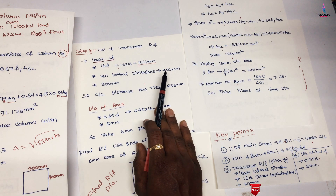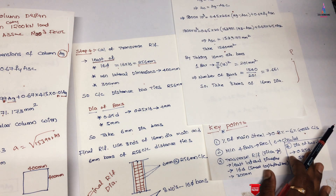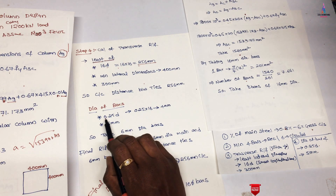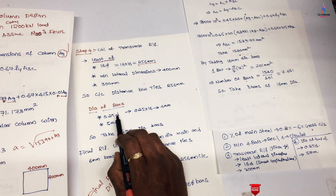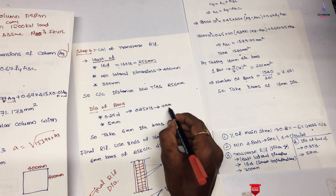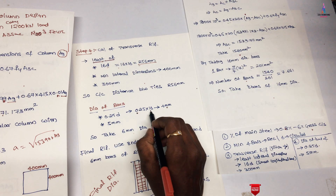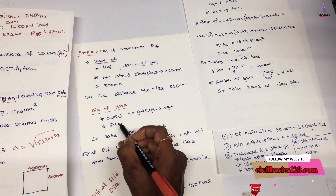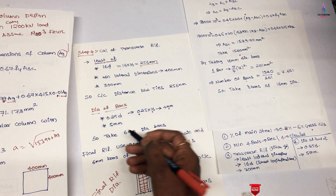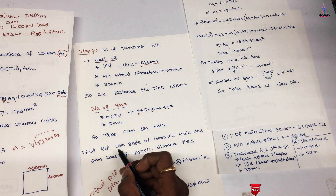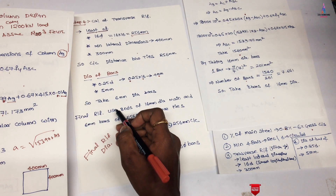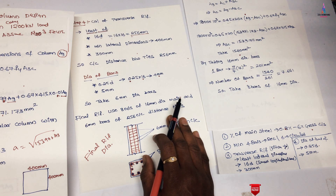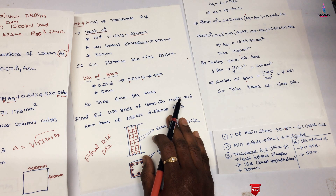For the diameter of lateral tie bars, we consider the greater of 0.25 × 16 = 4 mm and 5 mm minimum. Since both values are small, we adopt 6 mm diameter bars for the lateral ties. Therefore, the final reinforcement is: 8 bars of 16 mm diameter as main reinforcement, and 6 mm diameter ties at 256 mm center to center spacing.